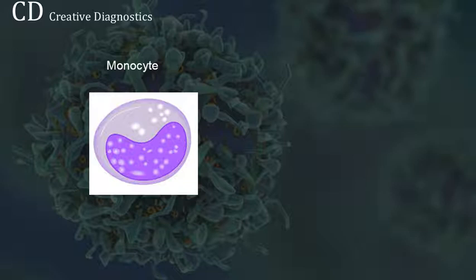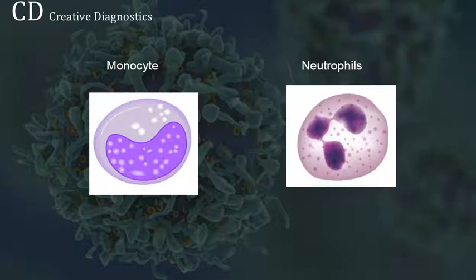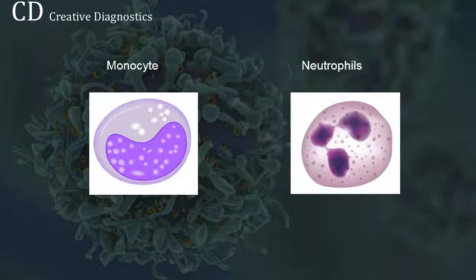Neutrophils are a type of immune cell that are one of the first cell types to travel to the site of an infection. They help fight infection by ingesting microorganisms and releasing enzymes that kill the microorganisms. A neutrophil is a type of white blood cell, a type of granulocyte, and a type of phagocyte.